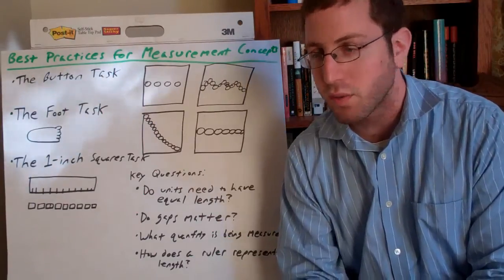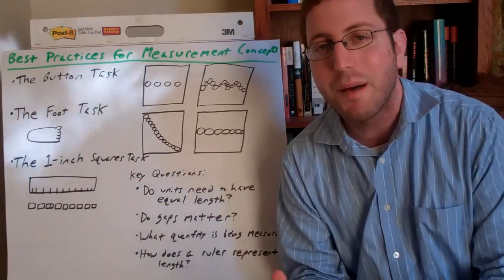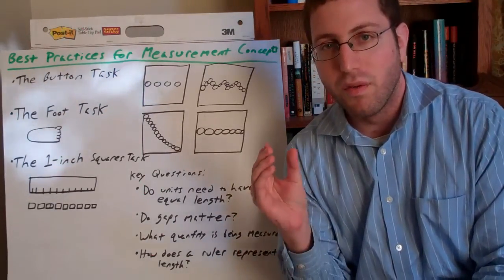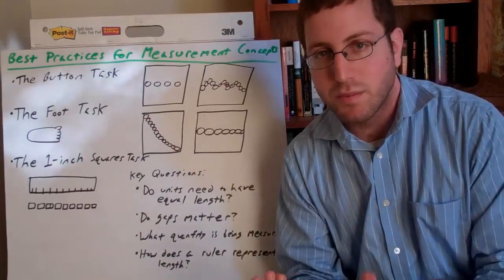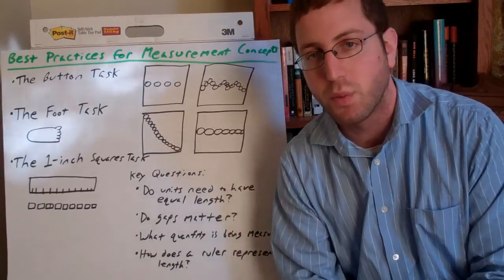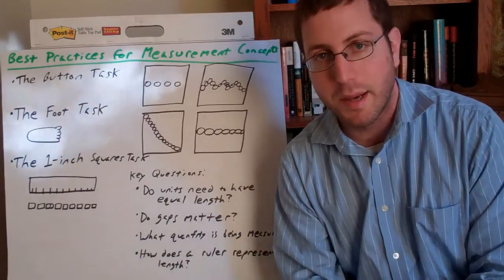By doing this, you're really helping students see that the ruler is not some magical object that happens to measure things. All it is, is a consecutive set of one inches put together. And that's what you're doing when you're measuring with a ruler, is you're seeing how many of those one inch squares the length of something takes up.